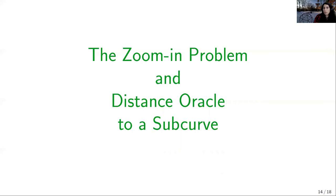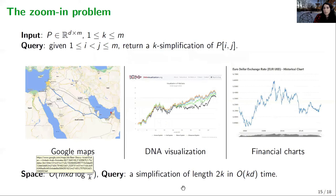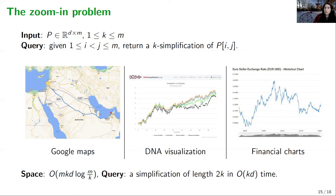We also consider a new problem called the zoom-in problem, which is related to computing a distance oracle for a sub-curve. Imagine an application that needs to visualize a very large curve of length m on screen with a limited number of pixels k. When displaying the entire curve you draw a k-simplification. When the user zooms in to see more detail of a subsequence, you still want to display at most k pixels, so you need to compute a k-simplification of the sub-curve.